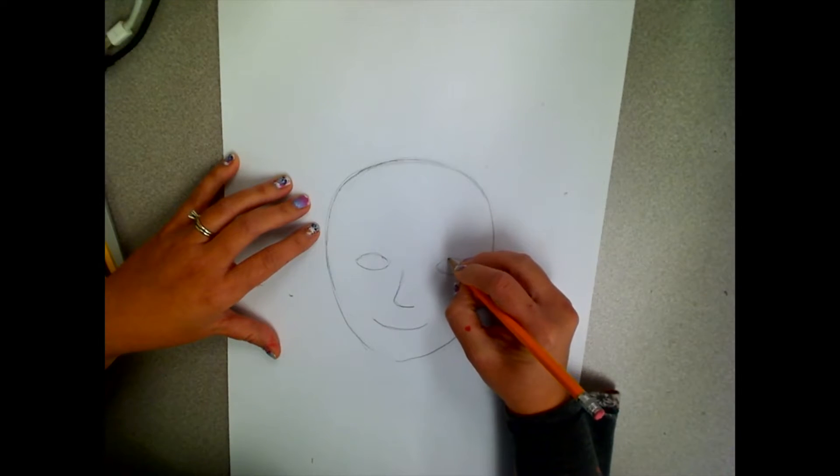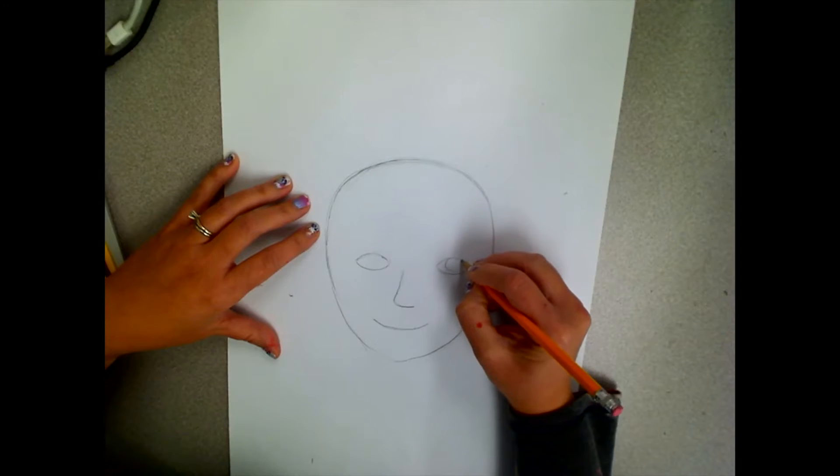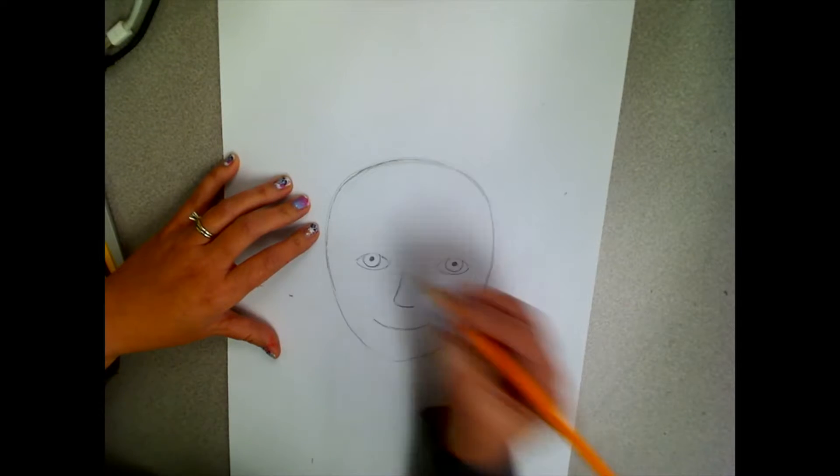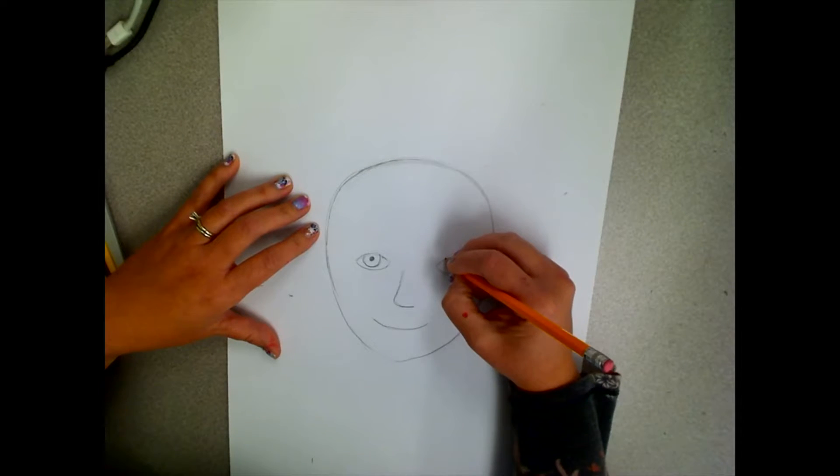When I draw my eyes, I make sure that I only show part of the iris. The iris is the colored part of your eye. The pupil is the black part. You don't see the full iris in your eye. It would look funny. So only draw part of your iris.